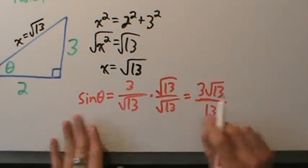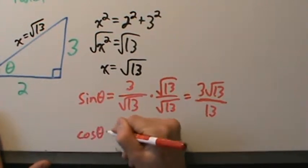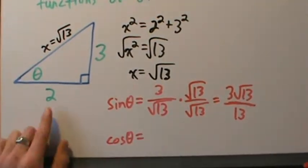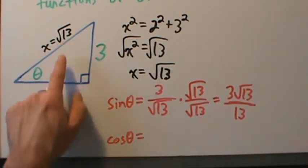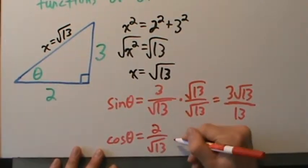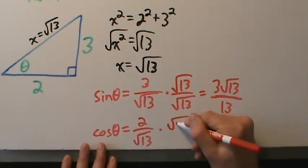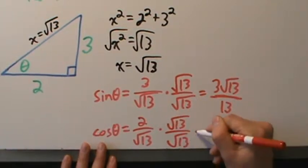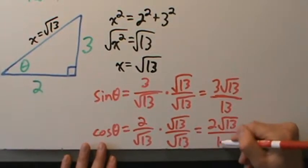Cosine of theta is adjacent over hypotenuse. Here theta's adjacent side is 2 and the hypotenuse is square root of 13, so cosine of theta is 2 over root 13. Again, if you want to rationalize, multiply by root 13 over root 13 and you get 2 root 13 over 13.